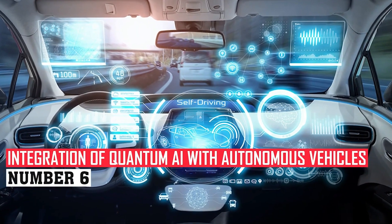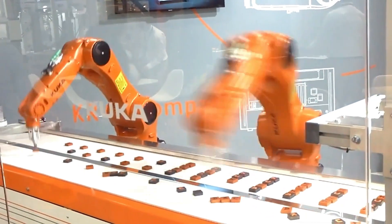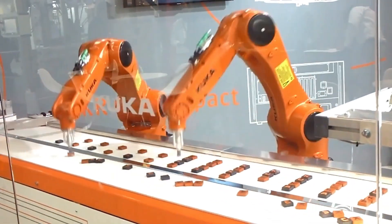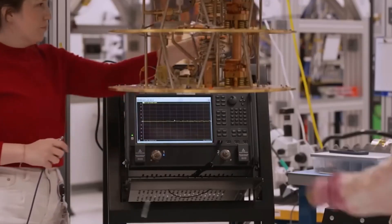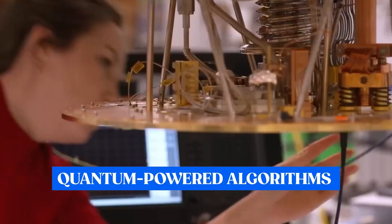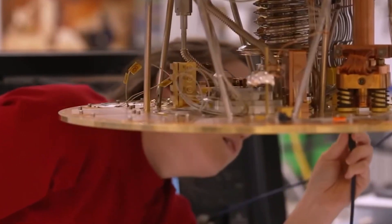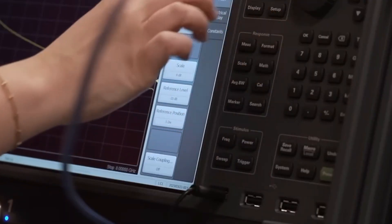Number 6: Integration of quantum AI with autonomous vehicles. The combination of AI and quantum computing holds the potential to completely transform robotics and autonomous vehicles. These systems use quantum-powered algorithms to optimize routes, make snap judgments, and easily adjust to changing circumstances.